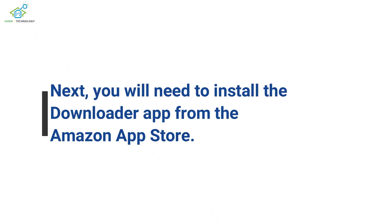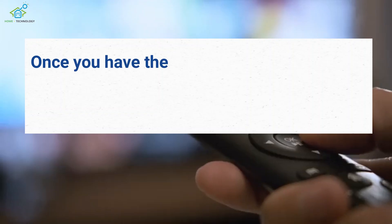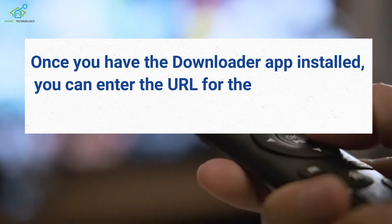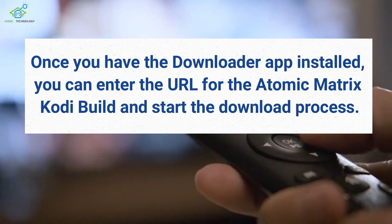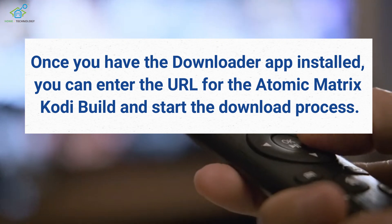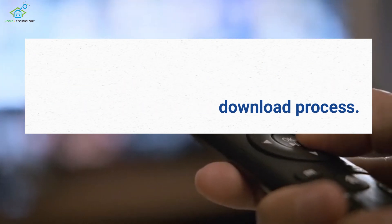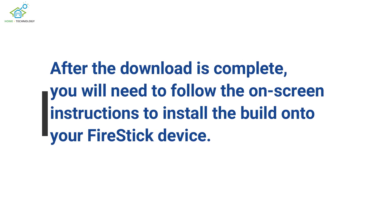Next, you will need to install the Downloader app from the Amazon App Store. Once you have the Downloader app installed, you can enter the URL for the Atomic Matrix Kodi Build and start the download process. After the download is complete, follow the on-screen instructions to install the build onto your Fire Stick device.